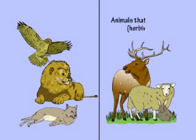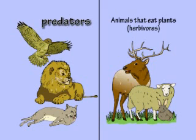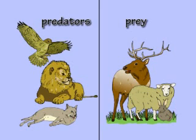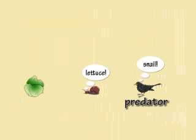Some animals eat plants and some animals eat other animals. An animal that hunts and eats other animals is called a predator. The animal that is hunted and eaten is called its prey. For example, snails eat lettuce and a blackbird eats snails, so the blackbird is a predator and the snail is its prey.